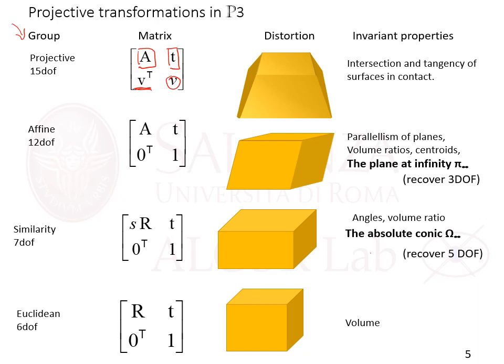The 12 degrees of freedom of an affinity are like the projective transformation, but the projective part is replaced by the canonical form of the plane at infinity, where this is a 3D null vector. The 7 degrees of freedom of a similarity are 3 for rotation, 3 for translation, and 1 for scale. So R is a 3x3 rotation matrix and T is a 3-dimensional translation vector.